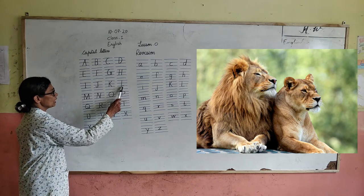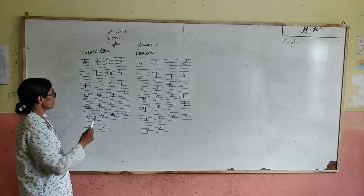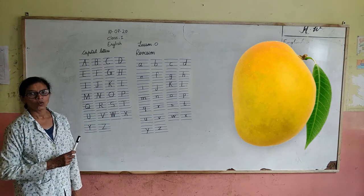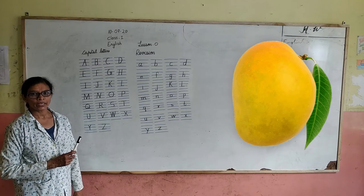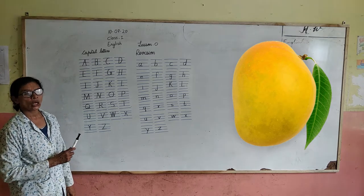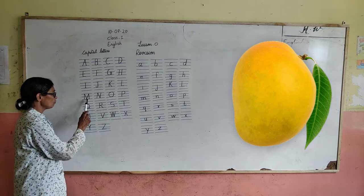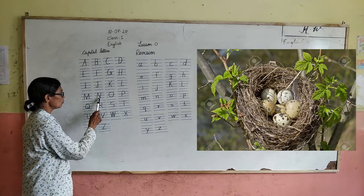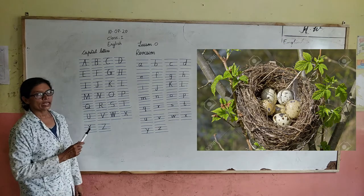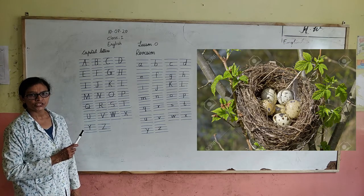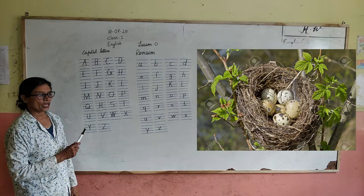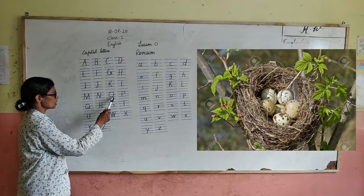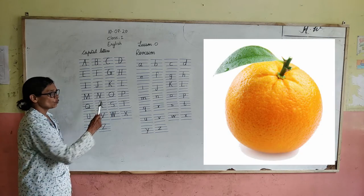L for lion — L-I-O-N, lion. M for mango — M-A-N-G-O, mango. N for nest — N-E-S-T, nest.